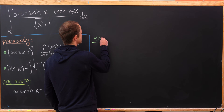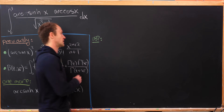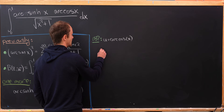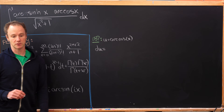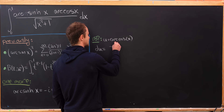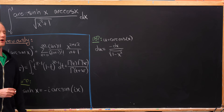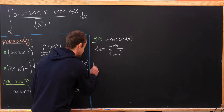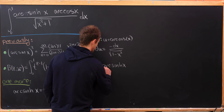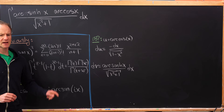We're going to start with a round of integration by parts. We'll take u to be the arc cosine of x, so du equals minus dx over the square root of 1 minus x squared — that's a well-known identity. Then dv is the inverse hyperbolic sine function all over the square root of x squared plus 1, dx.